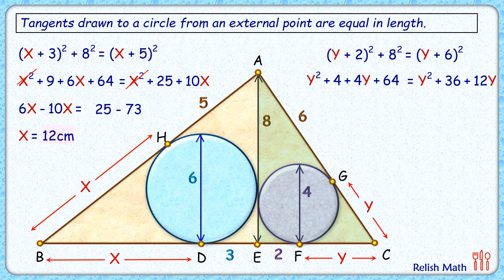Solving, y² on both sides gets cancelled. Taking all y terms on the LHS and non-y terms on the RHS, we get the equation. Solving, we get y = 4 cm.